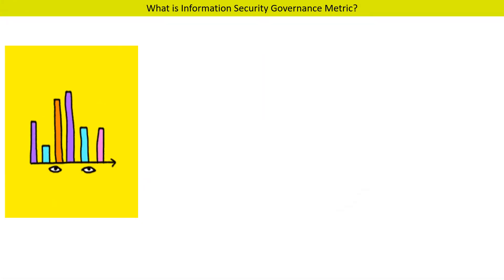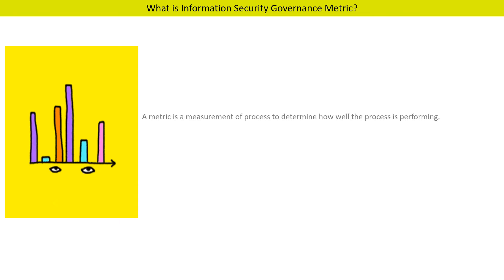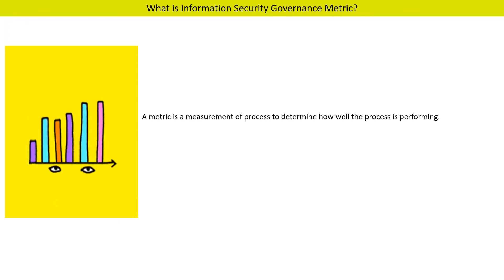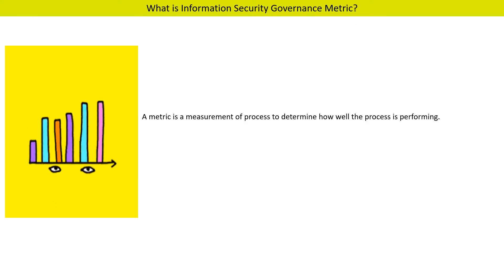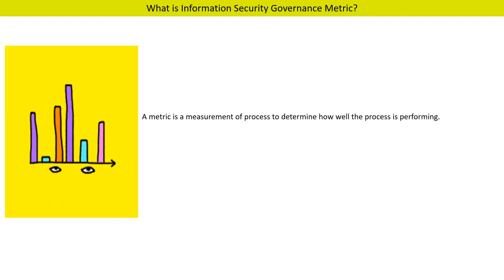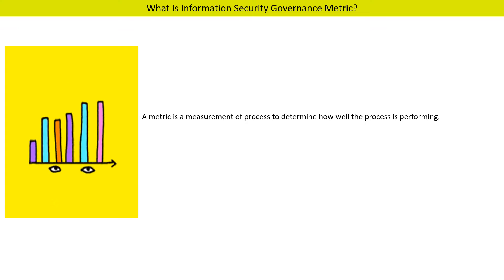Let us first understand what a metric is. A metric is a measurement of a process to determine how well the process is performing. On the basis of effective metrics, organizations evaluate and measure the achievement and performance of various processes and controls. The main objective of a metric is to help management in decision making.